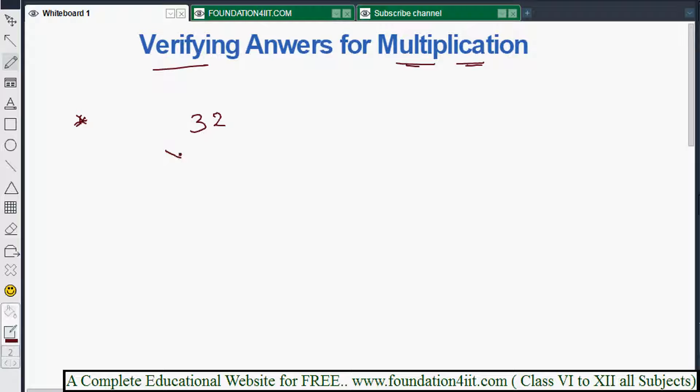For example, the given question 32 into 46, the answer is 1472. Without doing the multiplication again, how to verify this is right or wrong? We'll use the technique of SDS, that is single digit sum.